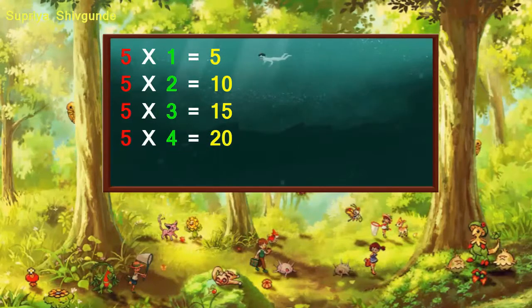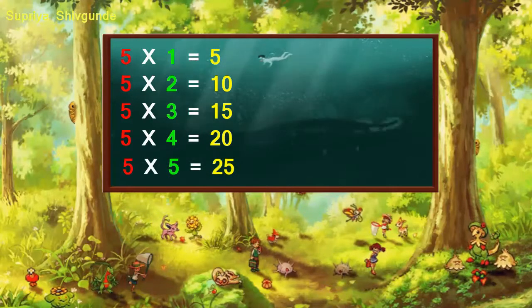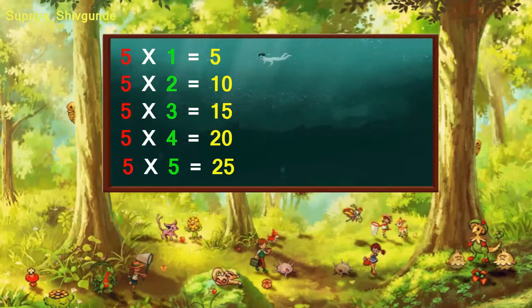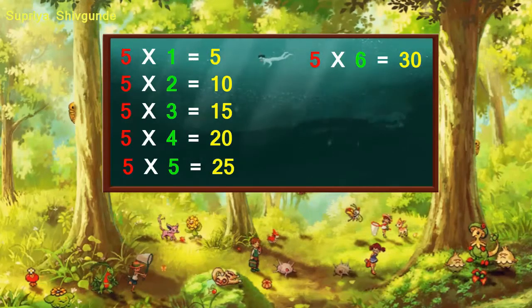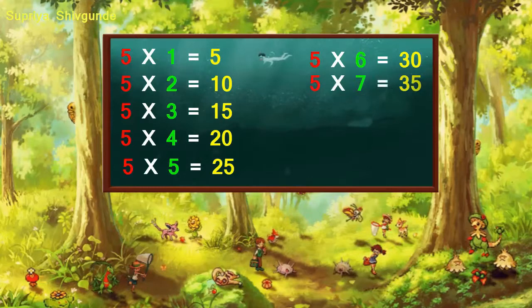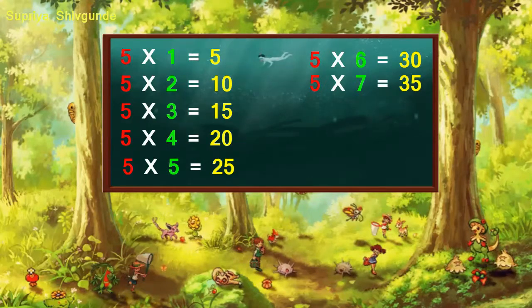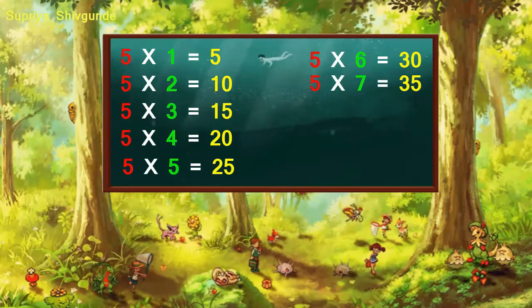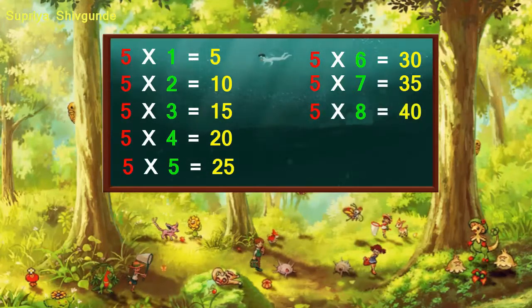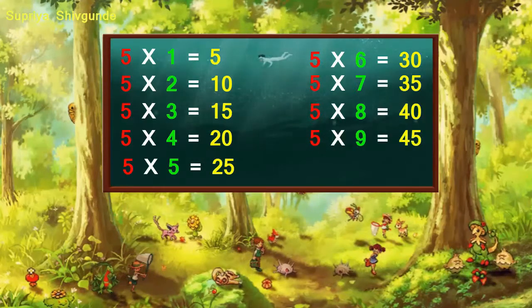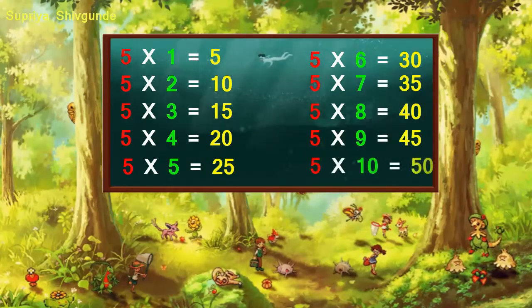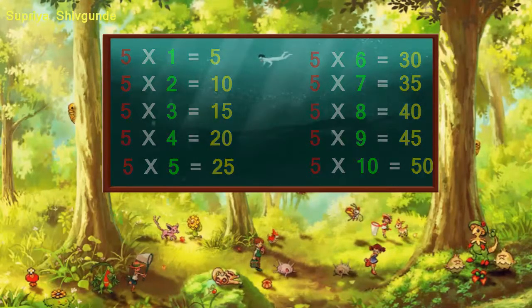Five fives are 25, five six are 30, five sevens are 35, five eights are 40, five nines are 45, five tens are 50.